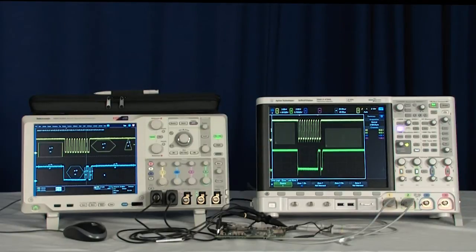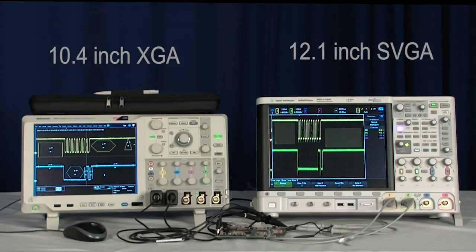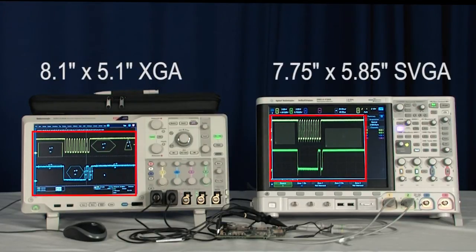The first thing you might notice is the size of the display. A large, high-resolution display makes it much easier to visualize your signals, especially when you zoom in on the details. But wait, the Graticule areas are about the same size, but the Agilent product has a lower resolution display, 640 pixels wide, where it really matters on the waveform.